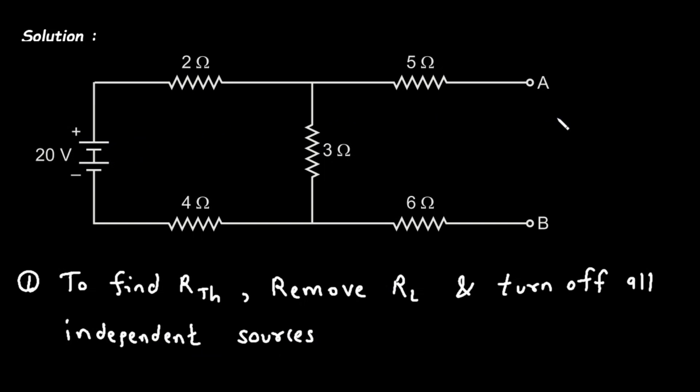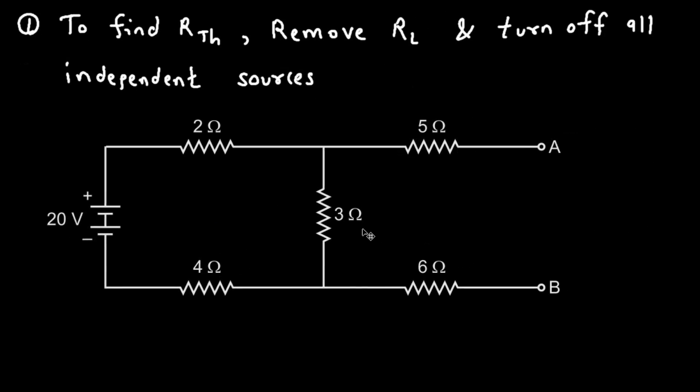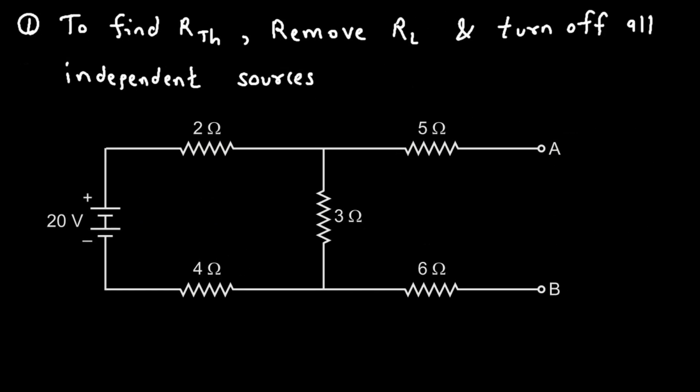Now here we can see the RL is already absent. So this will be our RL. And this is the independent voltage source. So let's take this circuit again. Now here this will be our RTH between terminal A and terminal B. And when we turn off this independent voltage source, that time it will be replaced by short circuit. Now we can easily find the value of RTH.